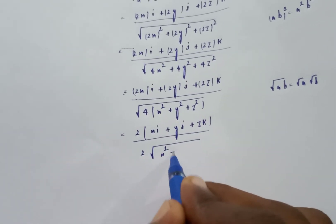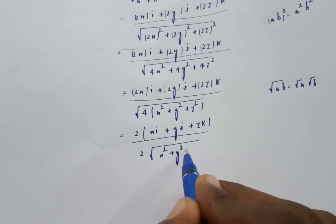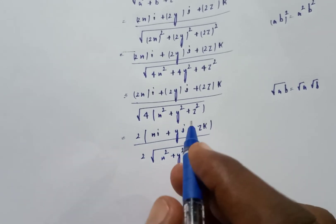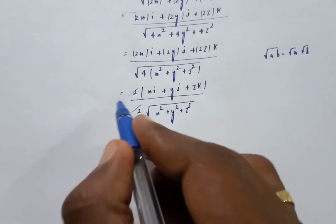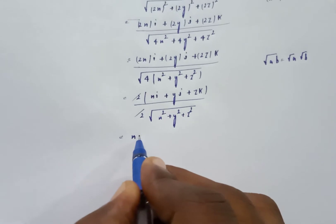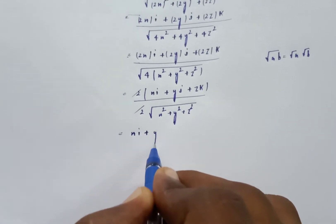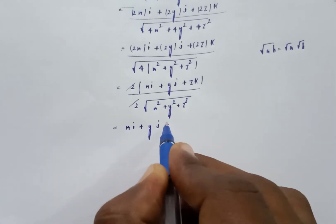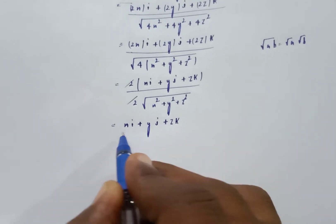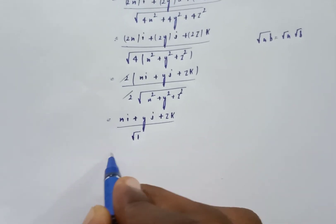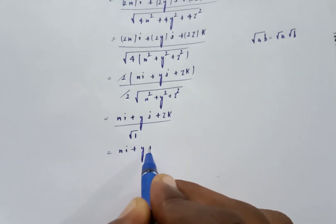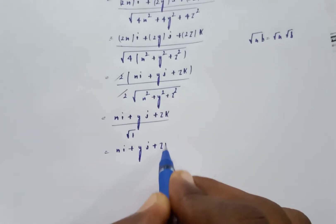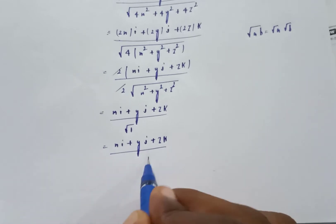Since the surface is x square plus y square plus z square equal to 1, the denominator simplifies to 2 times root of 1, which is 2. Therefore the unit normal n equals xi plus yj plus zk.